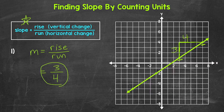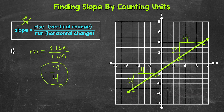Before moving on to number two, I want to show how any other two points will work as well. If we pick this point right here and this point right here, we go up one unit, two units, three units — so our rise is three. Then we go over one unit, two units, three units, four units — so our run is four. We end up with the same slope.